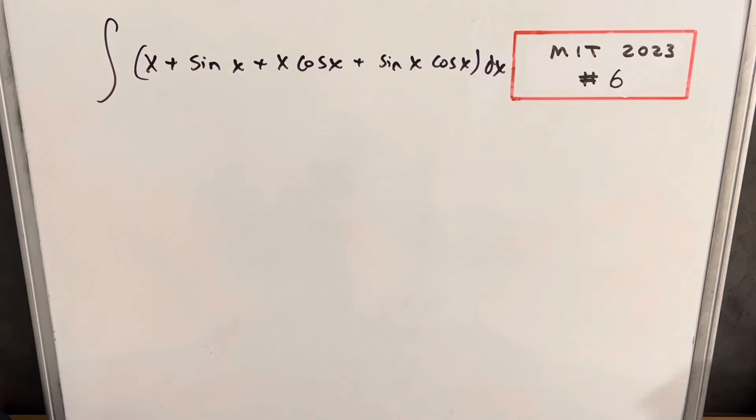So it turns out that you could actually just break this into four integrals and do each of them separately, and it's not that bad. It would just be kind of a time killer. The MIT integration bee is a timed test. You only have 20 minutes to do 20 problems.